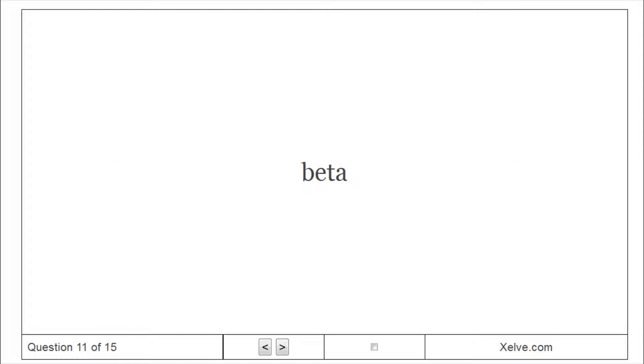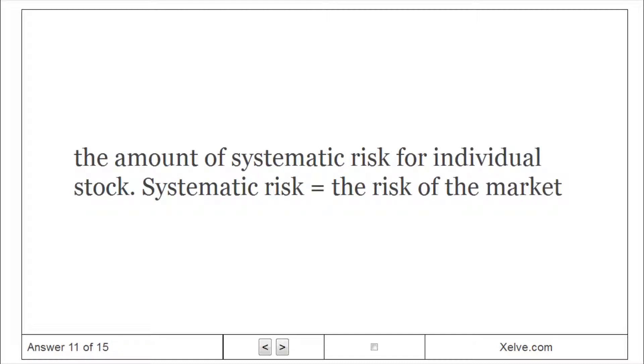Beta: the amount of systematic risk for individual stock. Systematic risk equals the risk of the market.